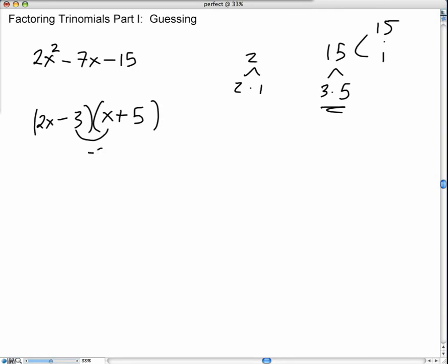Negative 3 times x is negative 3x, and 2x times 5 gives you 10x, which gives you 7x, a positive 7x. And so that's not the linear term. Fine. Let's try again.